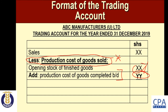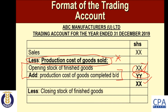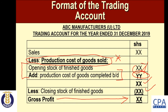Once you have the total — which is the sum of the opening stock of finished goods and the production cost of goods completed — you deduct the closing stock of finished goods. By deducting the closing stock of finished goods, you are able to derive the gross profit, which is the key figure we are aiming for in the trading account.